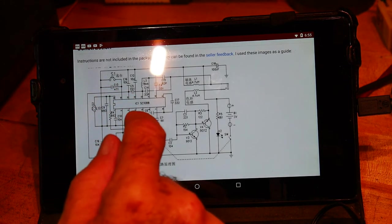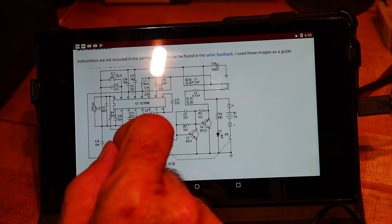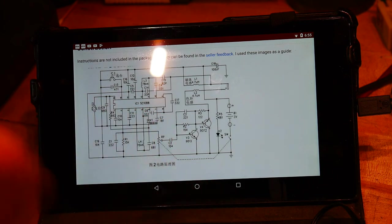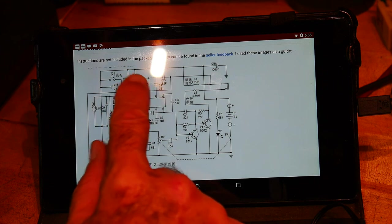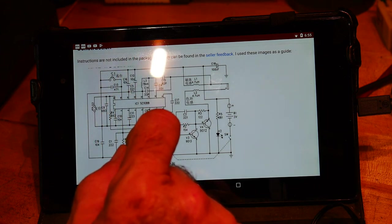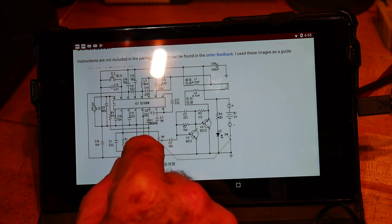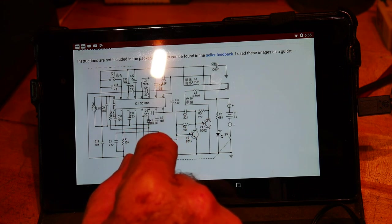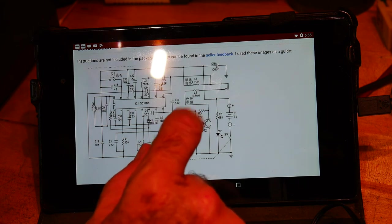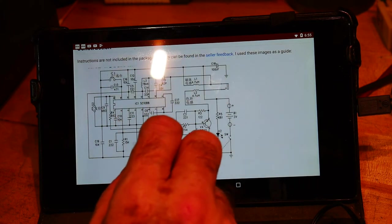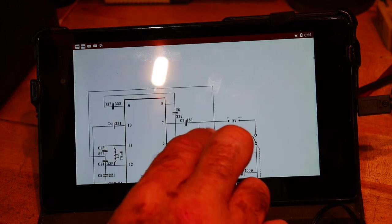That's a little better. So, a single chip, a SC1088, and regular radio parts, inductors, and capacitors, and some couple transistors. Looks like that's the power amplifier section, or the headphone amplifier section.